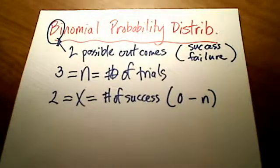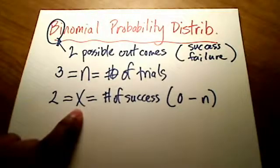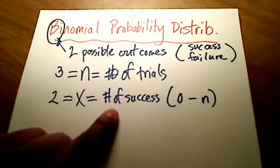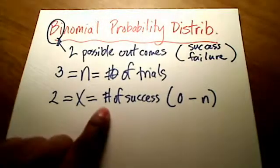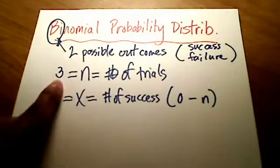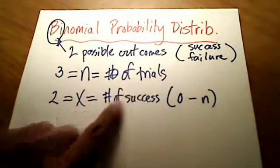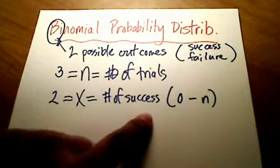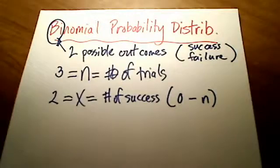So x can be 0 - maybe I don't make any shots. Or it could be 1, 2, or 3. I cannot make four successes. I cannot make four shots if I'm only taking three at most. So n is going to be the number of trials, and x is going to represent the number of times I succeed.